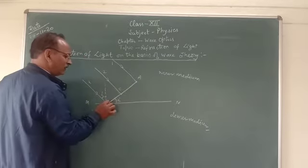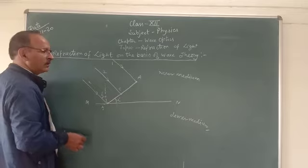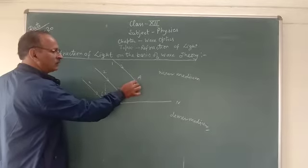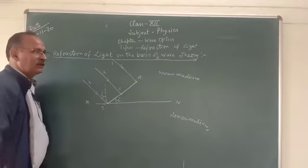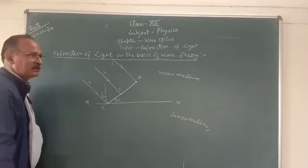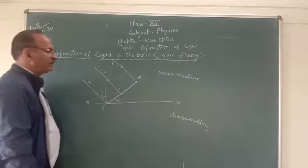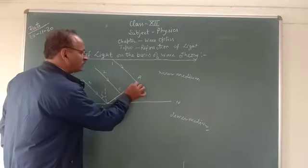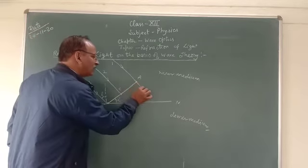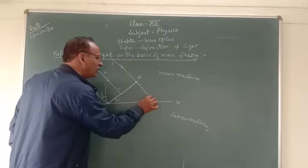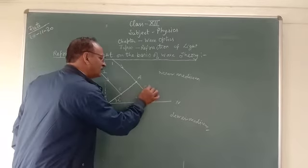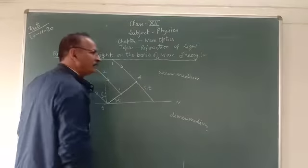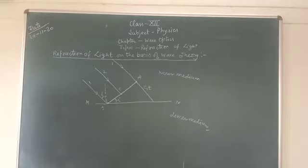They form a plane wavefront, and according to Huygens' construction, each of the particles acts like a source and emits secondary wavelets. The secondary wavelet starting from A reaches the boundary of the two media after time t, and it covers a distance c1·t, where c1 is the speed of light in the first medium.